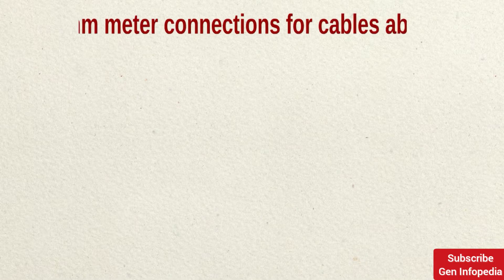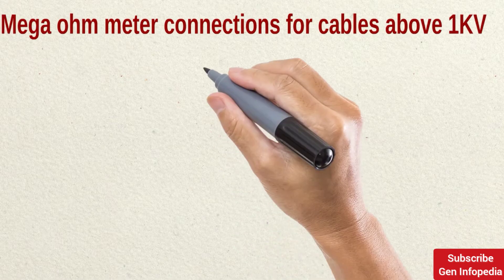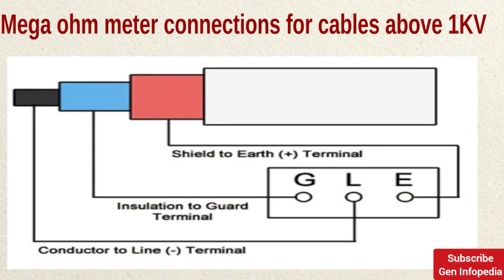For connections on cables above 1 kV, we need to connect three probes to the megaohmmeter. The red line probe is directly connected to the cable conductor, the black earth probe is connected to the cable armor, and the third is the guard terminal — connected with a green cable directly to the cable insulation.